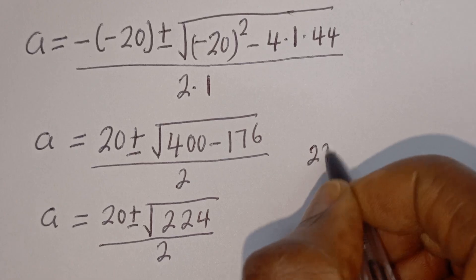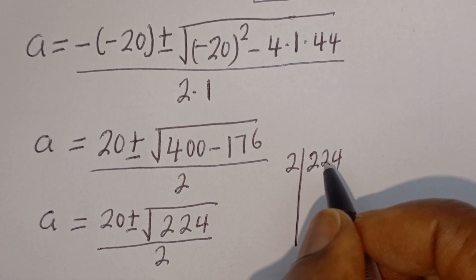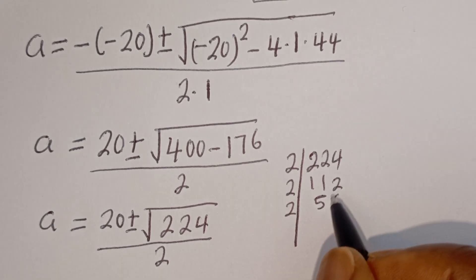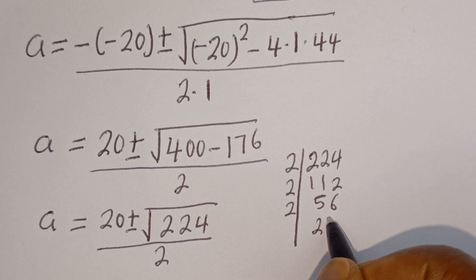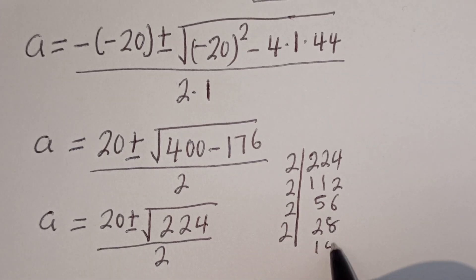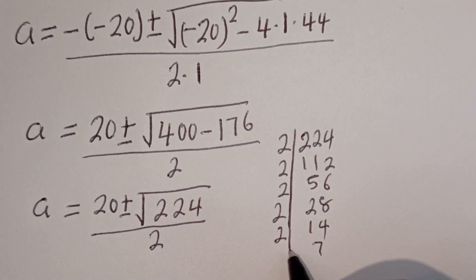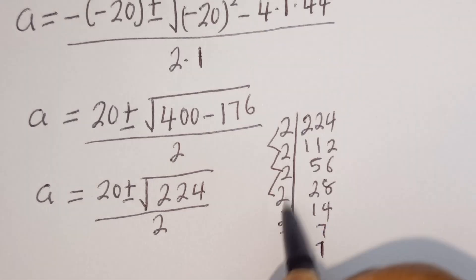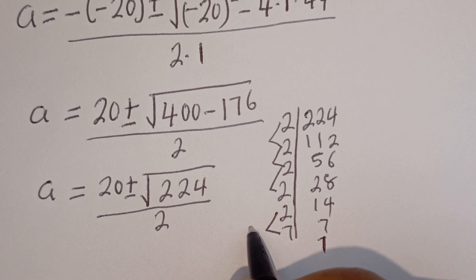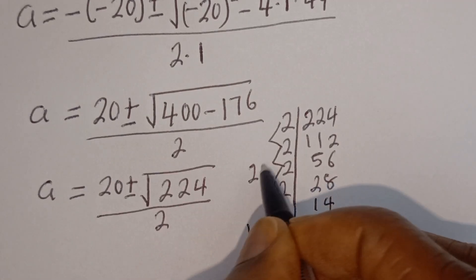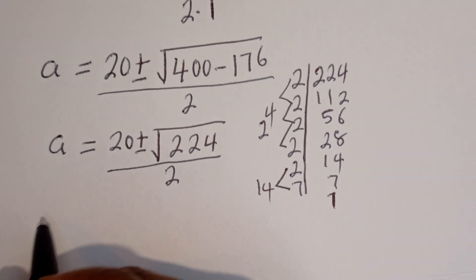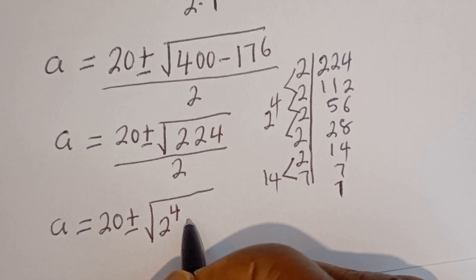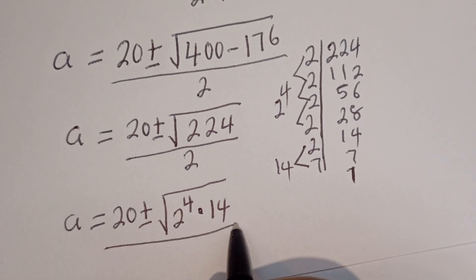Now let's get the prime factors of 224. We have 224 equals 2 times 112, equals 2 times 2 times 56, equals 2 times 2 times 2 times 28, equals 2 times 2 times 2 times 2 times 14, equals 2 times 2 times 2 times 2 times 2 times 7. So 224 equals 2 to the power of 4, multiplied by 14.